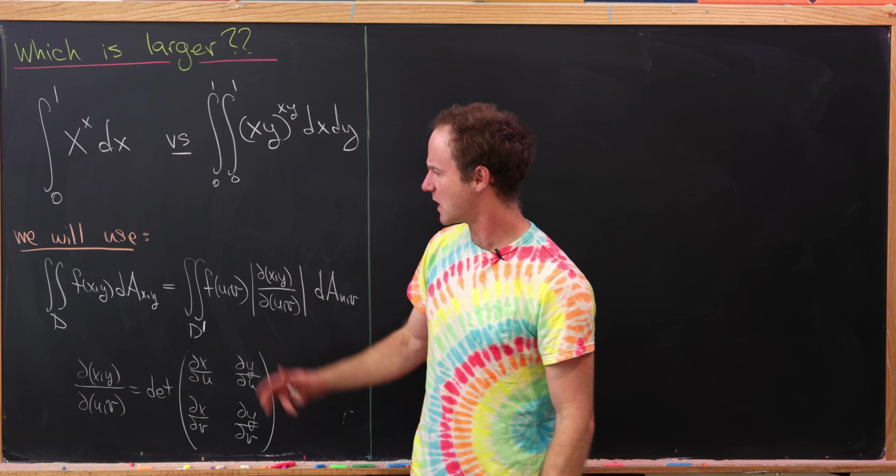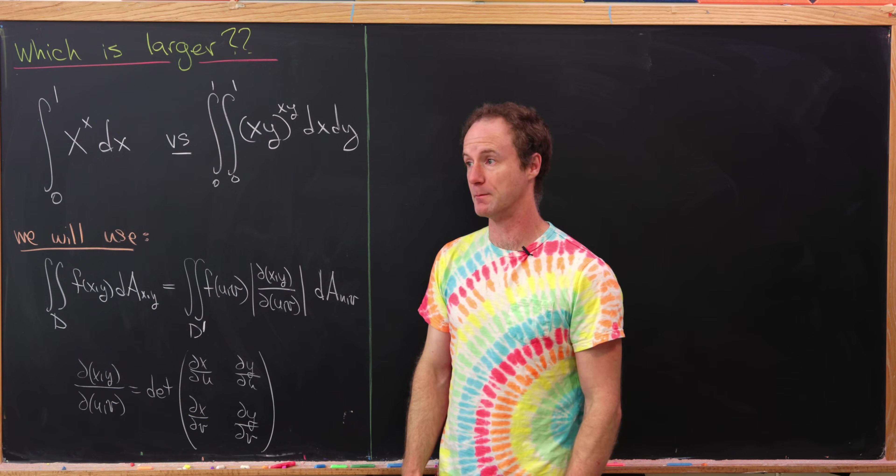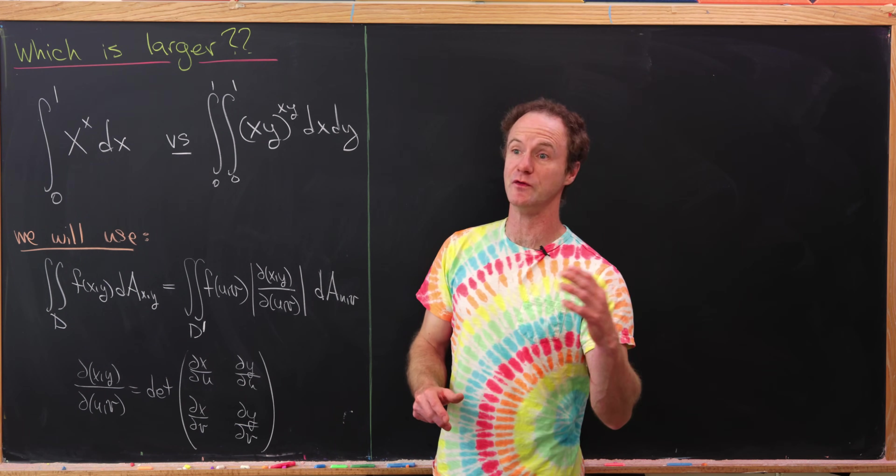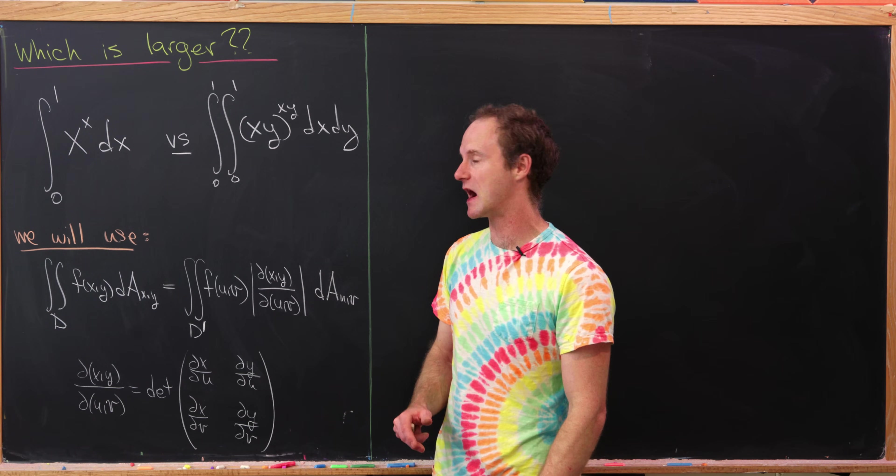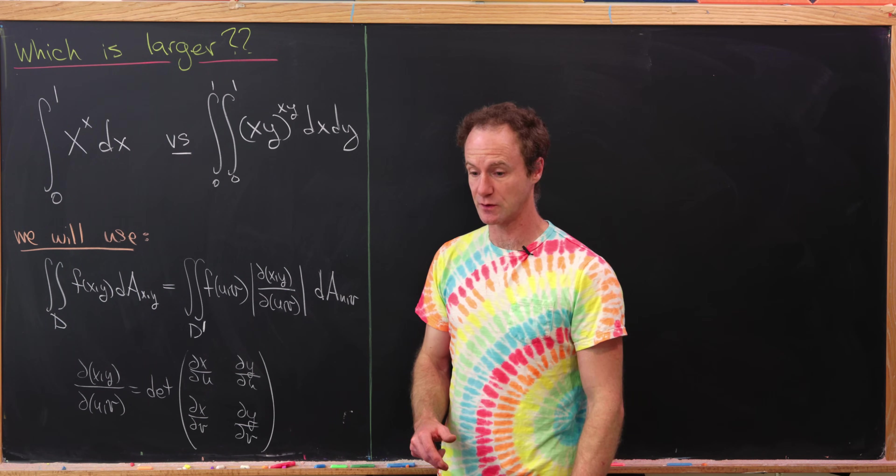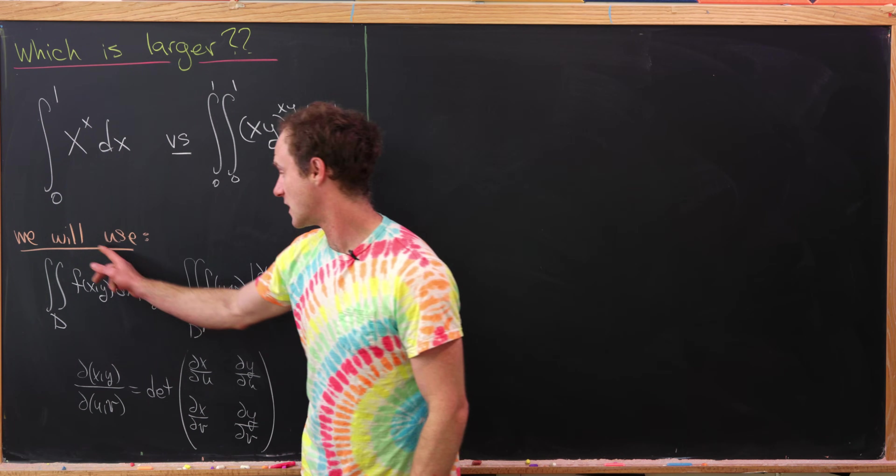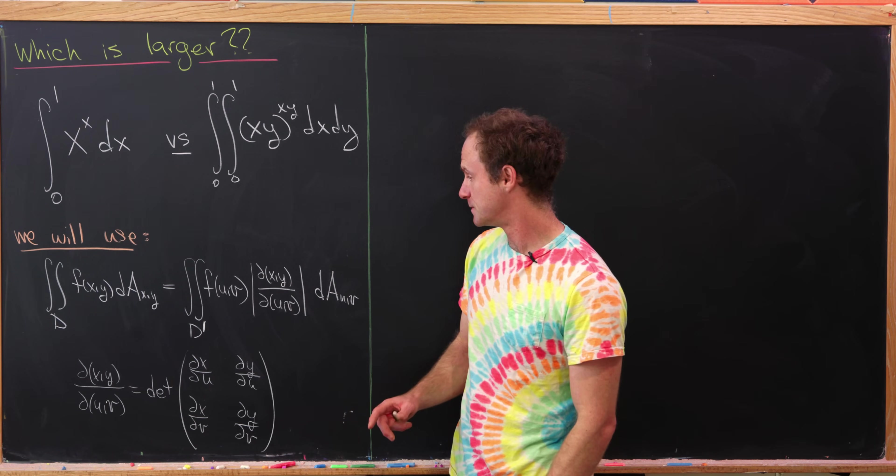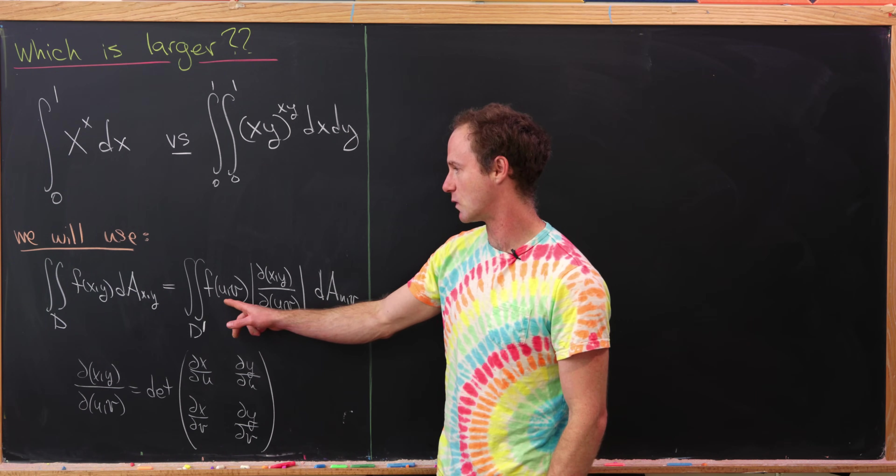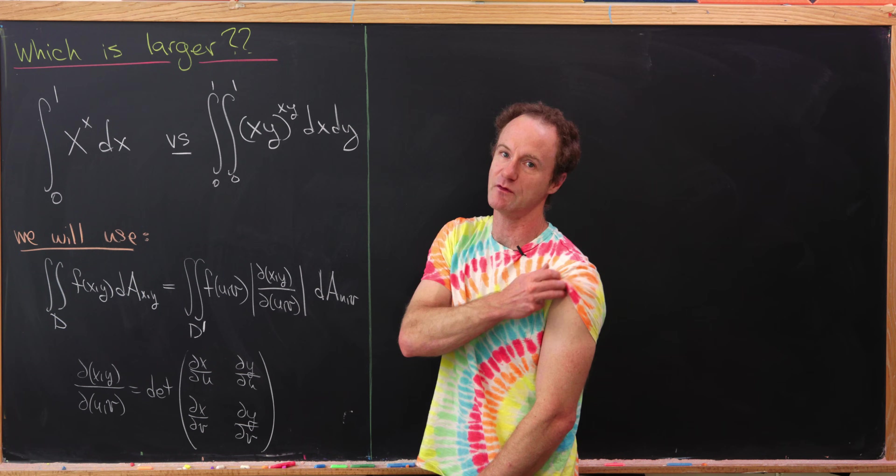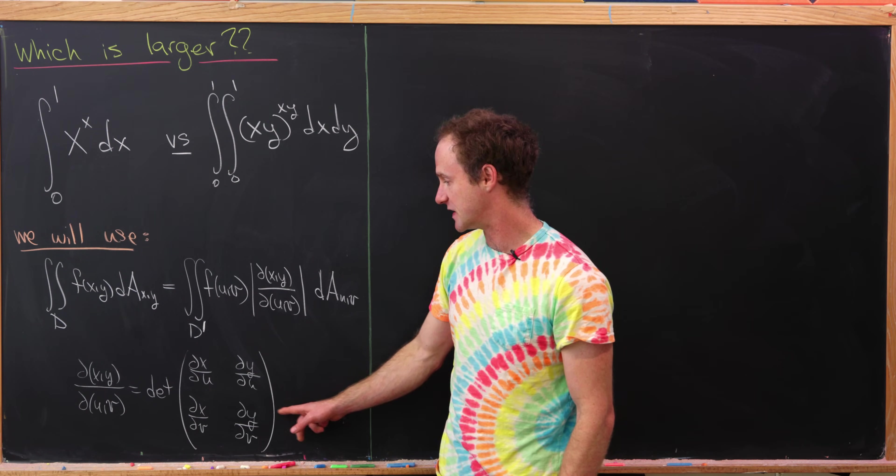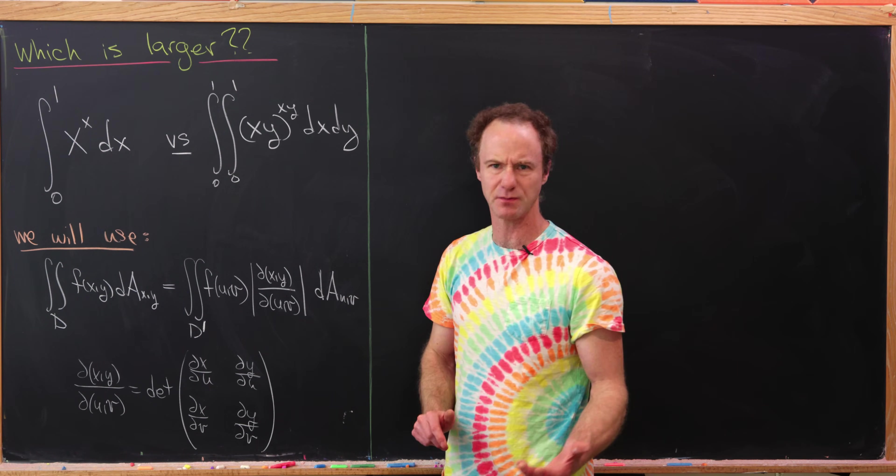Along the way, we're going to use the following change of variables formula for a multiple integral. If you've got this way of relating the uv variables with the xy variables, maybe u is a function of x and y, and v is also a function of x and y, then the double integral in the xy plane is equal to the following double integral in the uv plane, where we've exchanged our x and y's with u's and v's inside of the function, and we've multiplied by this thing called the Jacobian, which is the absolute value of the determinant of this matrix that's made up of these partial derivatives.